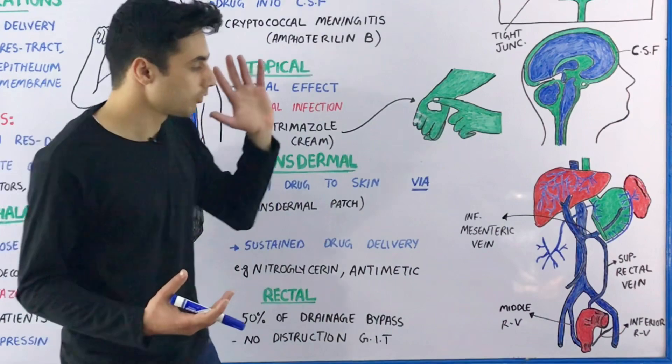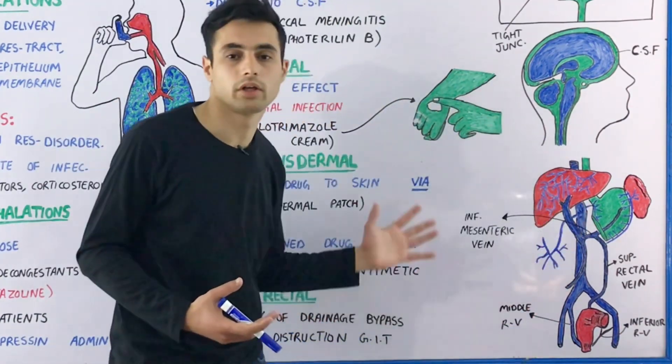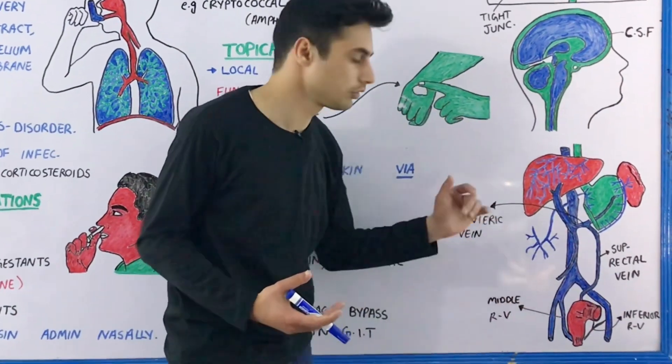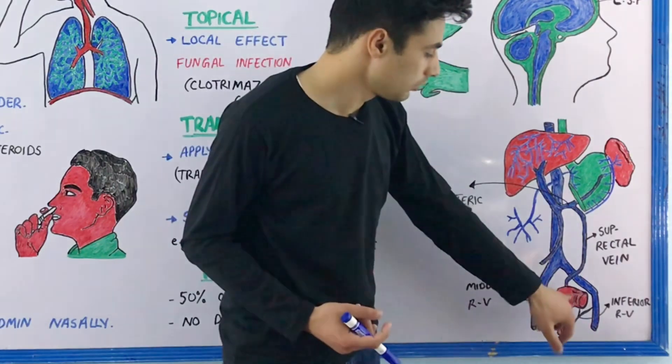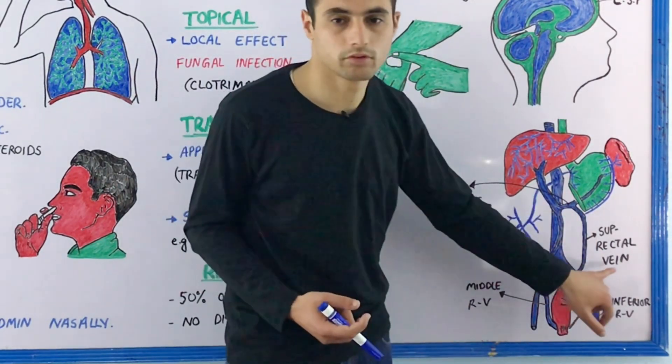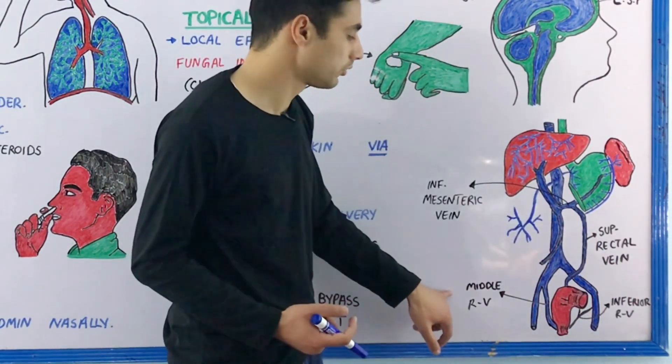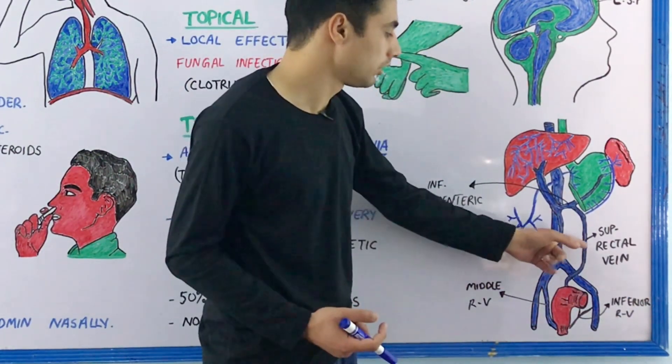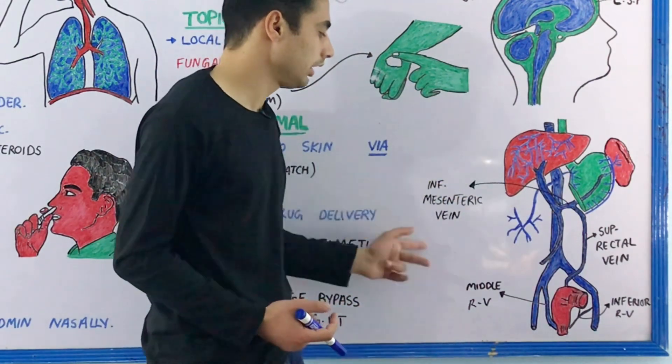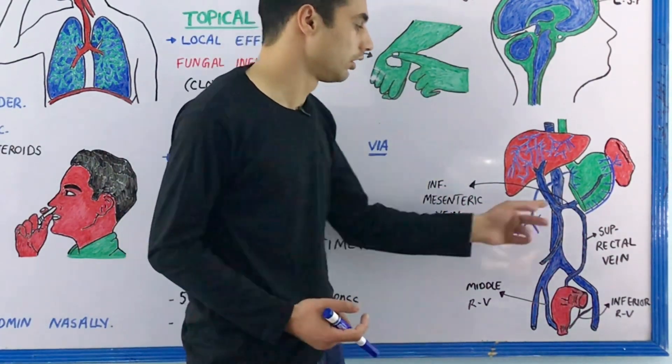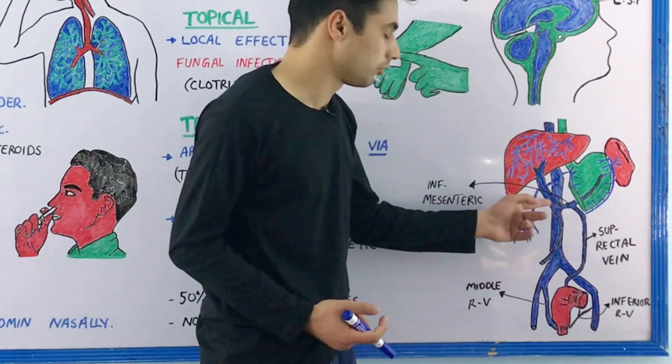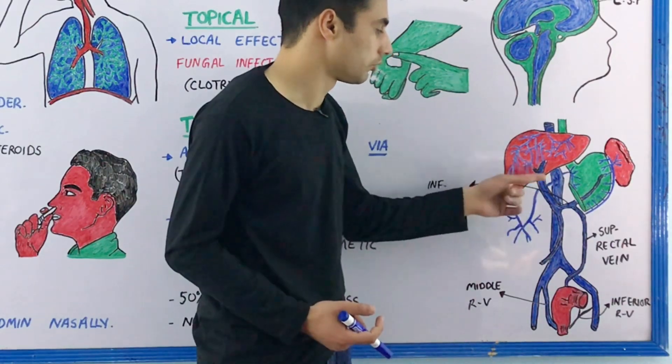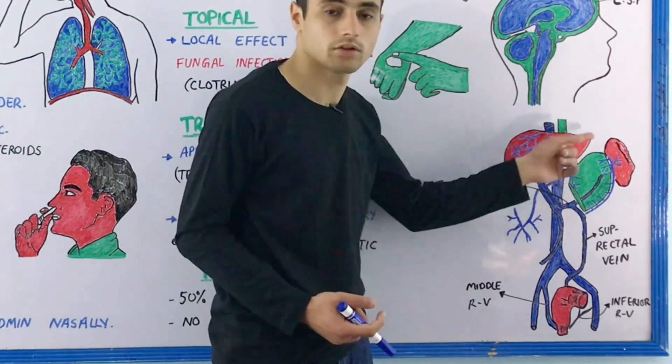To explain the venous drainage of the rectal route, have a look at this diagram. The rectum is drained by three veins: the superior rectal vein, the middle rectal vein, and the inferior rectal vein. The superior rectal vein drains into the inferior mesenteric vein, which connects with the portal vein and reaches the liver.